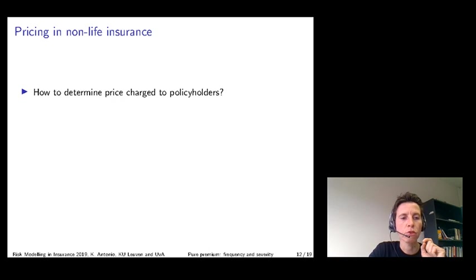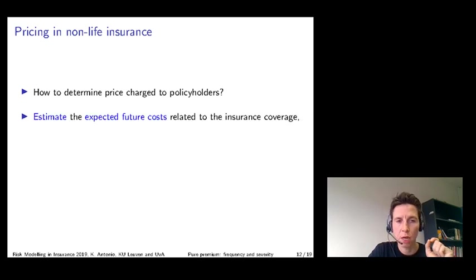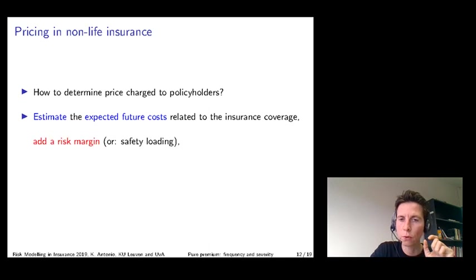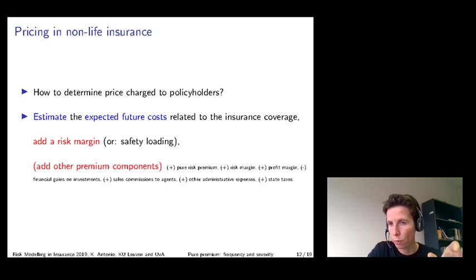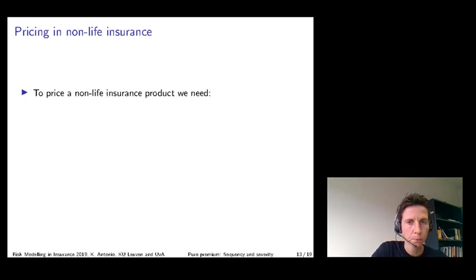Pricing models for non-life insurance products rely on an estimate, obtained from statistical models, of the expected future costs related to the insurance coverage. This is the so-called premium, or pure premium, or risk premium. Actuaries will add a risk margin or a safety loading to this expected cost, and possibly some other components like a loading for profit, a loading for commissions to agents, and so on. This explains how we go from the pure risk premium to the actual insurance premium that will be charged in practice.